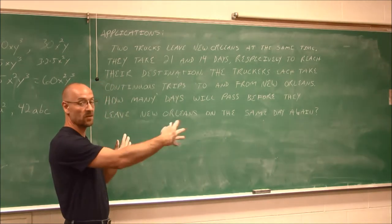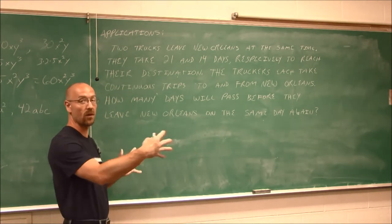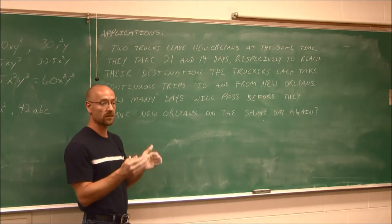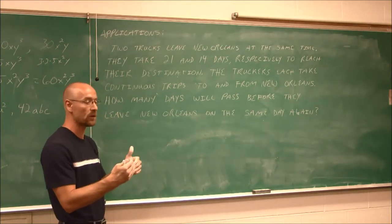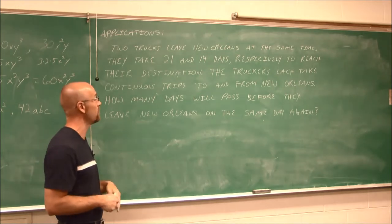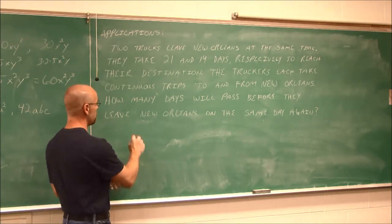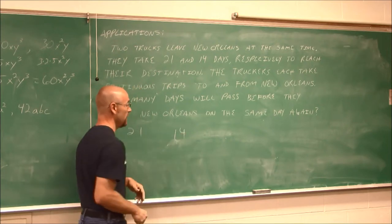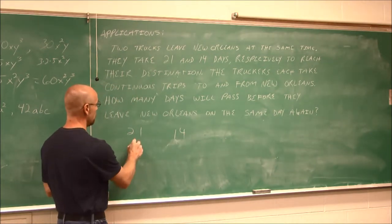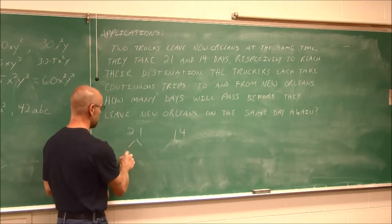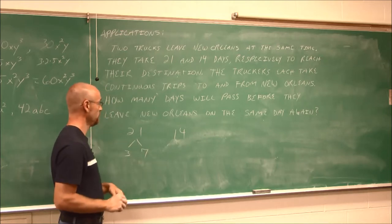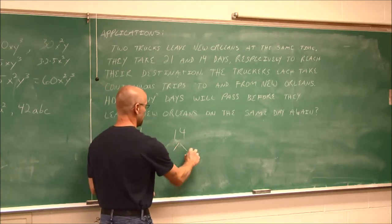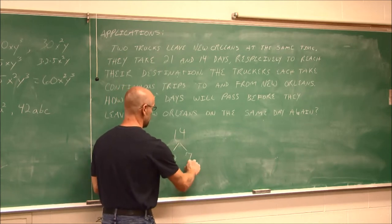So essentially what this question is asking, if we read it again, two trucks leave at the same time. They go do different things. They come back at different times. But eventually, they're going to come back to New Orleans at the same time. When are they going to be there at the same time again? Well, we can find that answer by finding the least common multiple of 21 days and 14 days. Now, we could list all the multiples of 21 and list all the multiples of 14, but that's going to be tedious until we find that very first multiple that they have in common. So to do the least common multiple here, I'm going to take 21 and 14 and use what I learned, prime factorization. Well, 21 is 3 times 7, and 14 is 2 times 7.